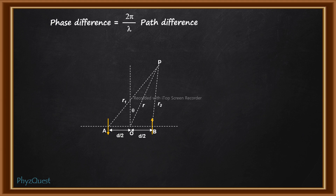If Δφ is the phase difference between the two waves at the time of constructive interference — and we already have an initial phase difference of pi — then the total phase difference will be Δφ plus pi, which equals (2π/λ) times (r1 minus r2).